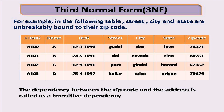The dependency between zip code and address is called transitive dependency. If you change the zip code, the address changes accordingly. Customer ID to address derived dependency — then break it to resolve the transitive dependency.